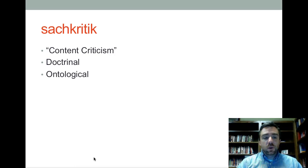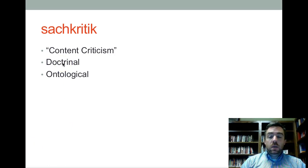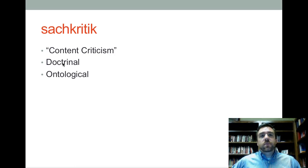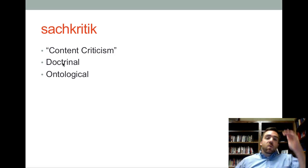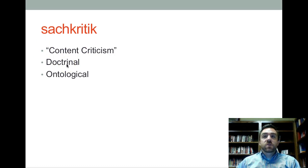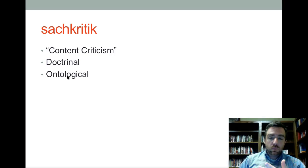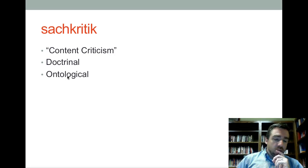There are also theological tools you can use. Sachkritik is a German word that means content criticism, and it can be either doctrinal or ontological. Doctrinal meaning you go to the text with a particular systematic category and say this is what the Bible is about, and I'm going to look for it — not going through each book looking for all categories, but taking one doctrinal category as the overall meaning of the Bible. Ontological is looking more at the nature of scripture: what is the Bible, what is it doing, and therefore what is it about?